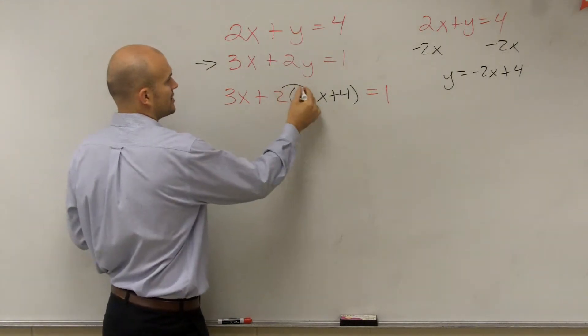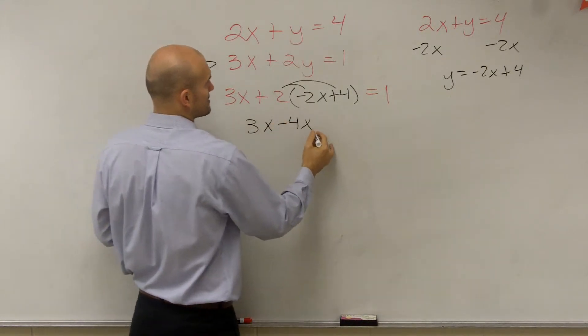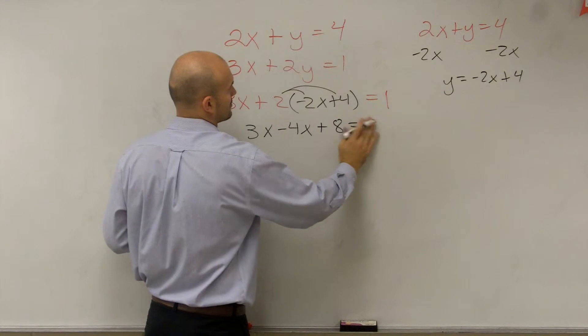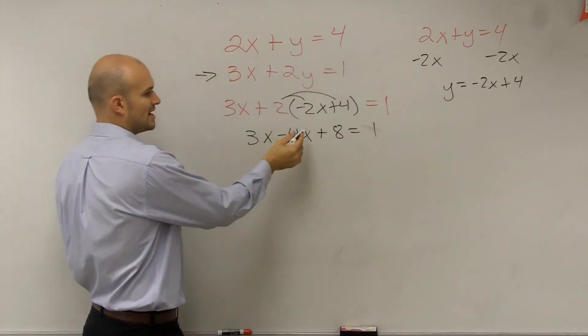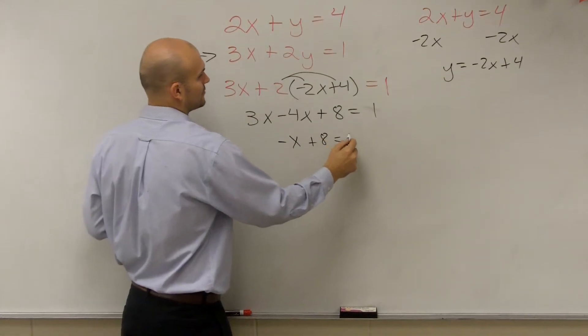So now I use distributive property, and I get 3x minus 4x plus 8 equals 1. 3x minus 4x is negative x plus 8 equals 1.